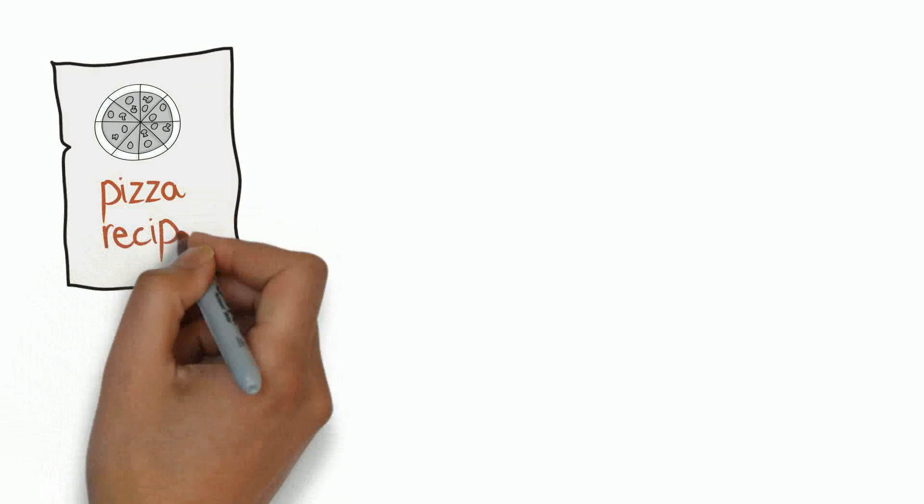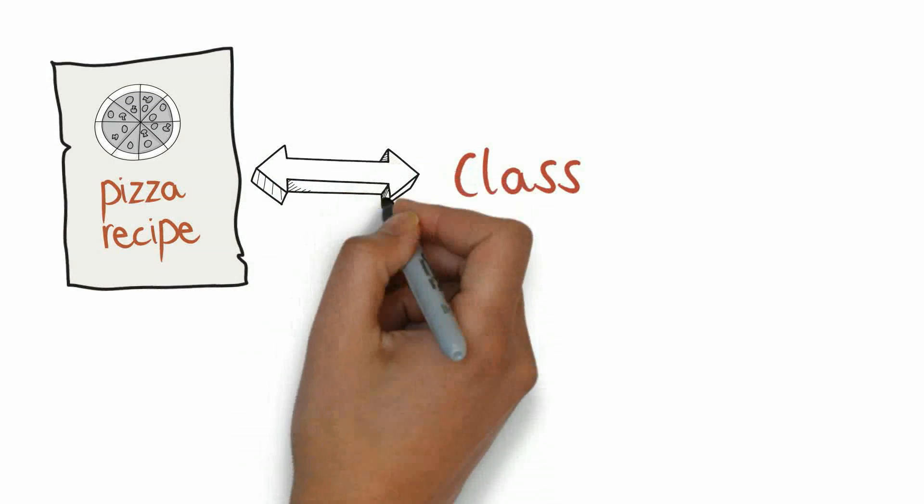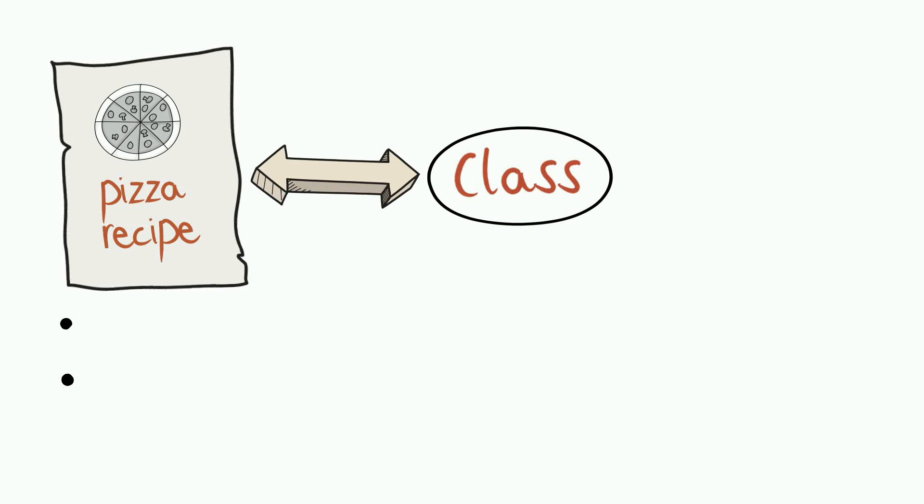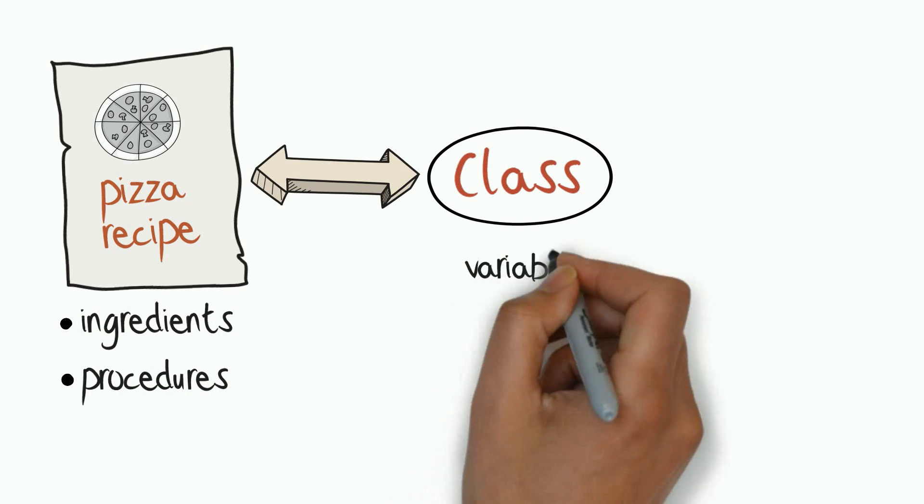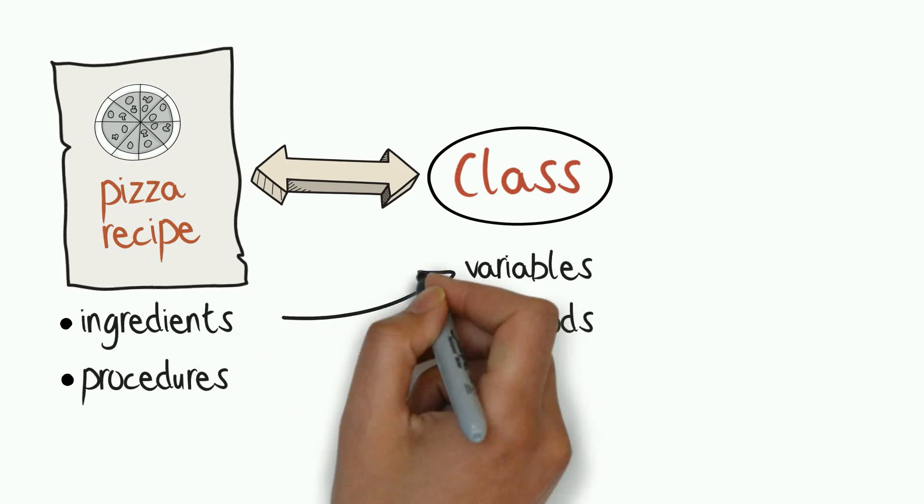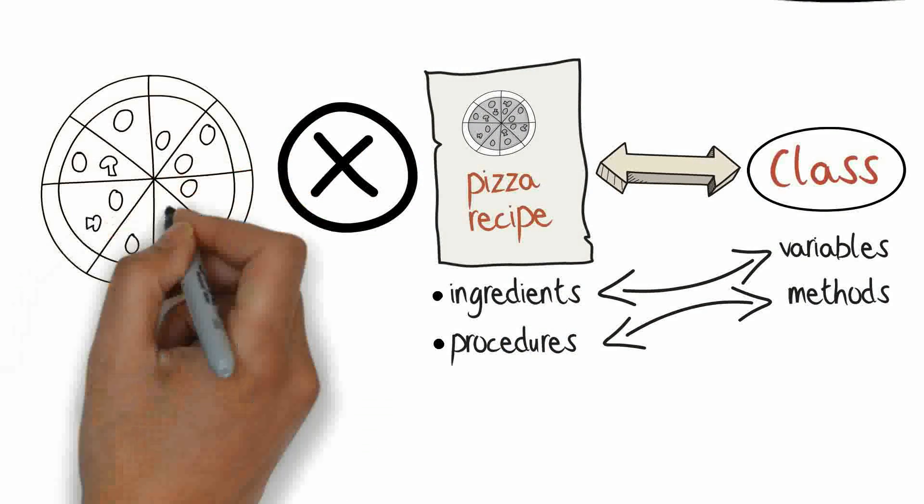Consider a recipe for a pizza. A class is like a recipe. Just like a class, a recipe lists out all the ingredients needed and the procedure to find the desired result. The ingredients are like the variables and the procedures are like the methods. The recipe itself isn't a pizza.